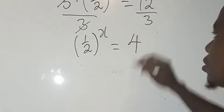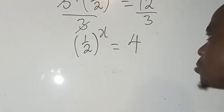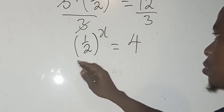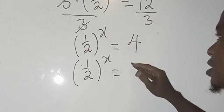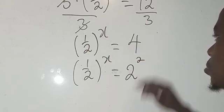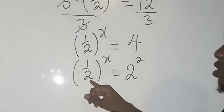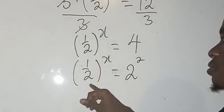So from here, what's the next thing we're going to do? I'm going to have (1/2)^x equals—I can write this in index form as 2^2. But you can see that here we have 1/2, but here...